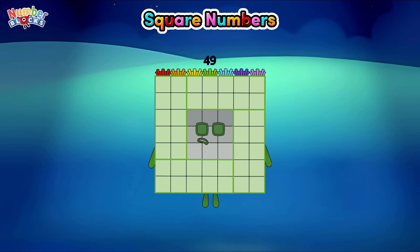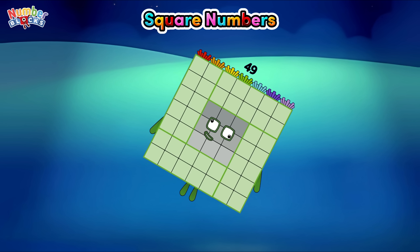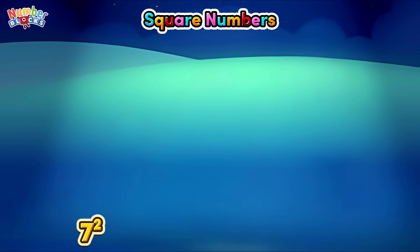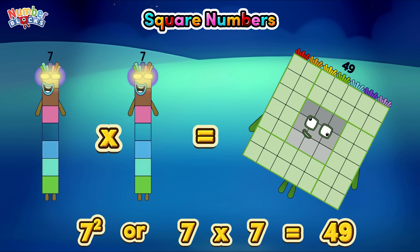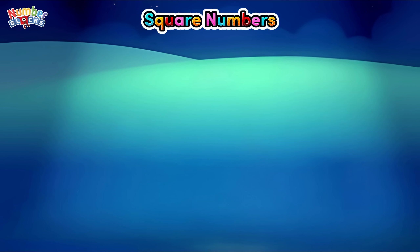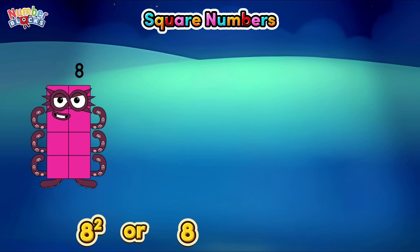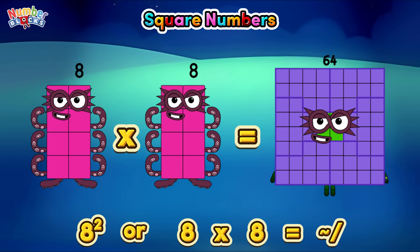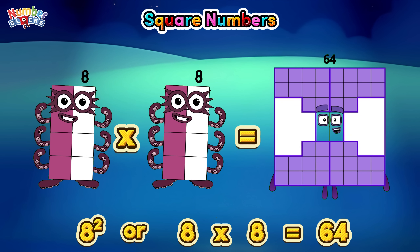Forty-nine. Seven square, or seven times seven, is equals to forty-nine. Eight square, or eight times eight, is equals to sixty-four.